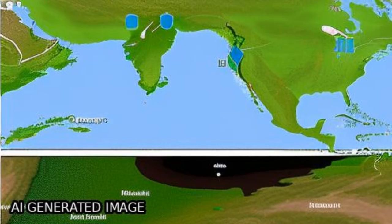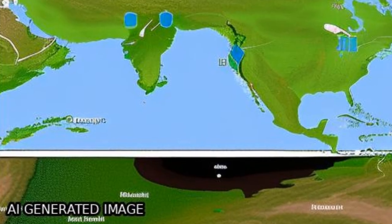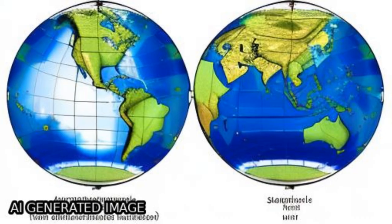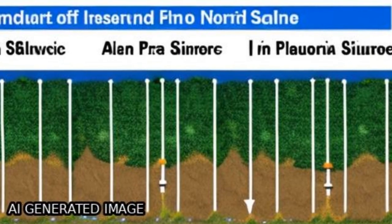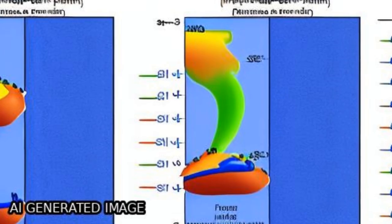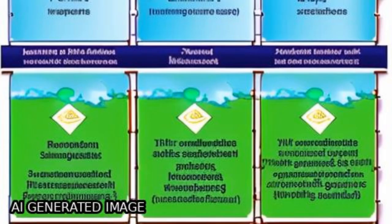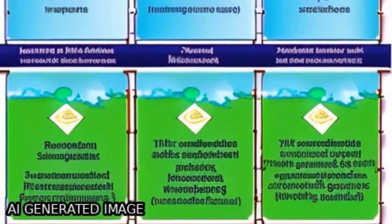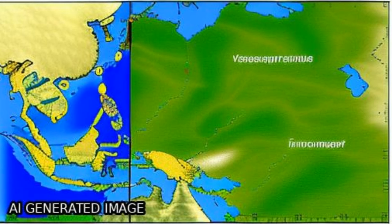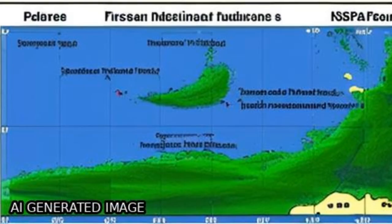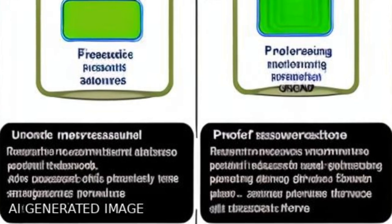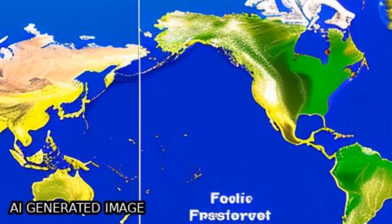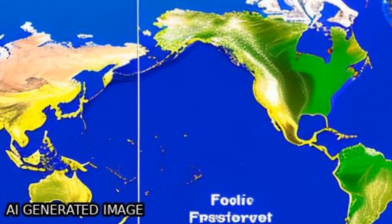This study investigates the improvement of Soil Moisture Active Passive (SMAP) sea surface salinity (SSS) over five river-dominated oceans globally using three machine learning approaches: random forest, support vector regression, and artificial neural network.